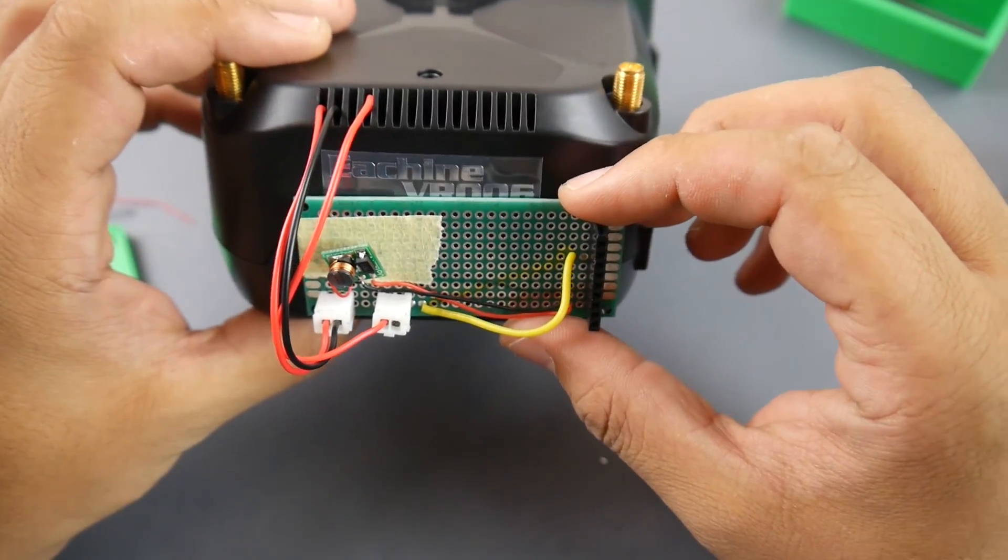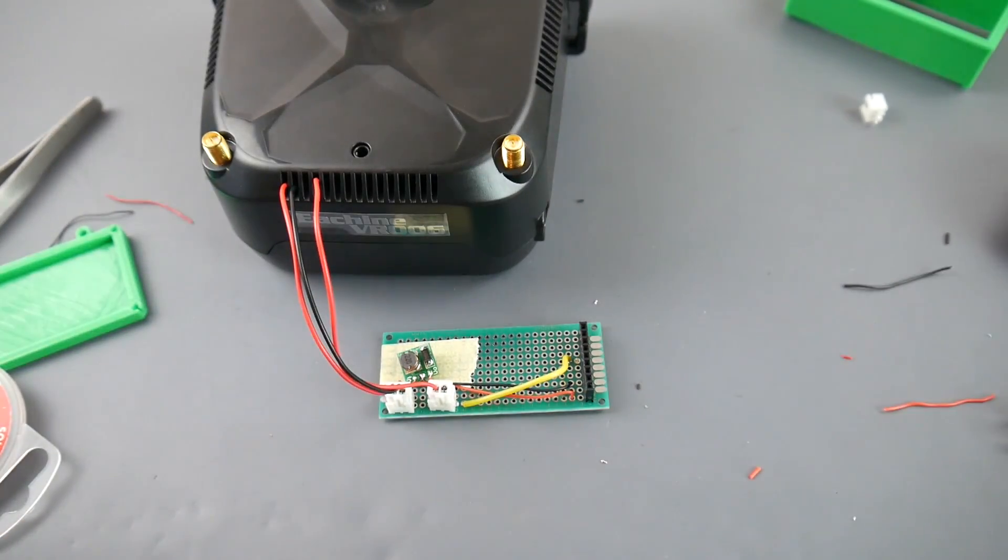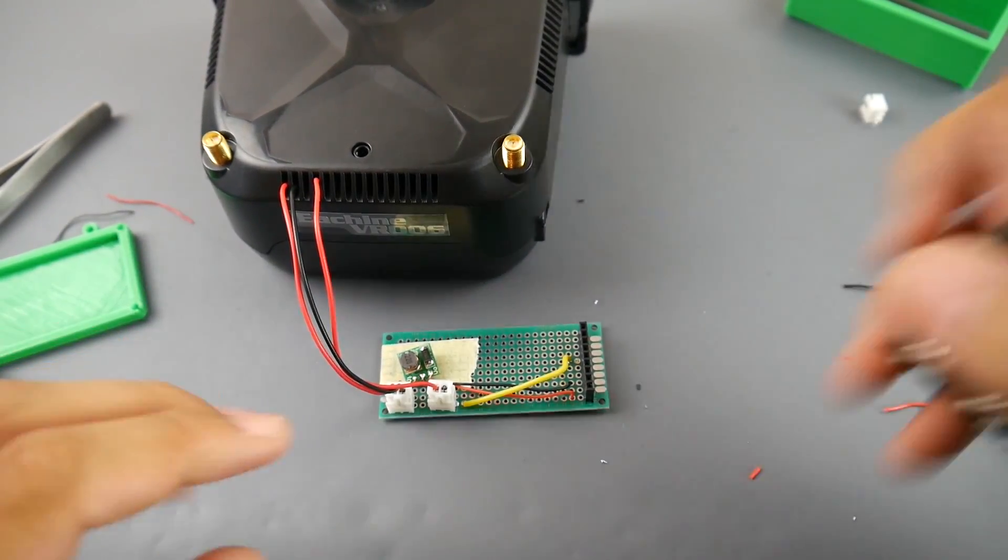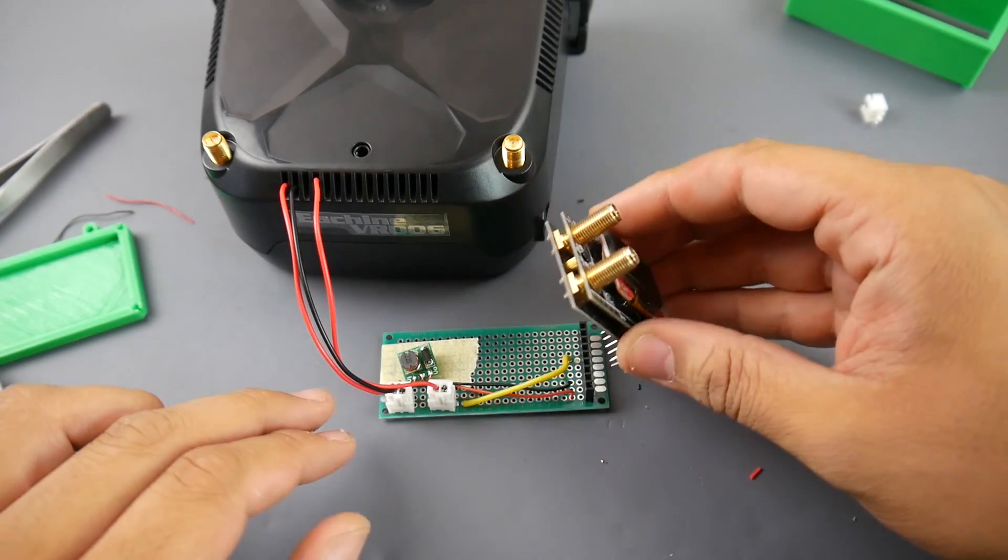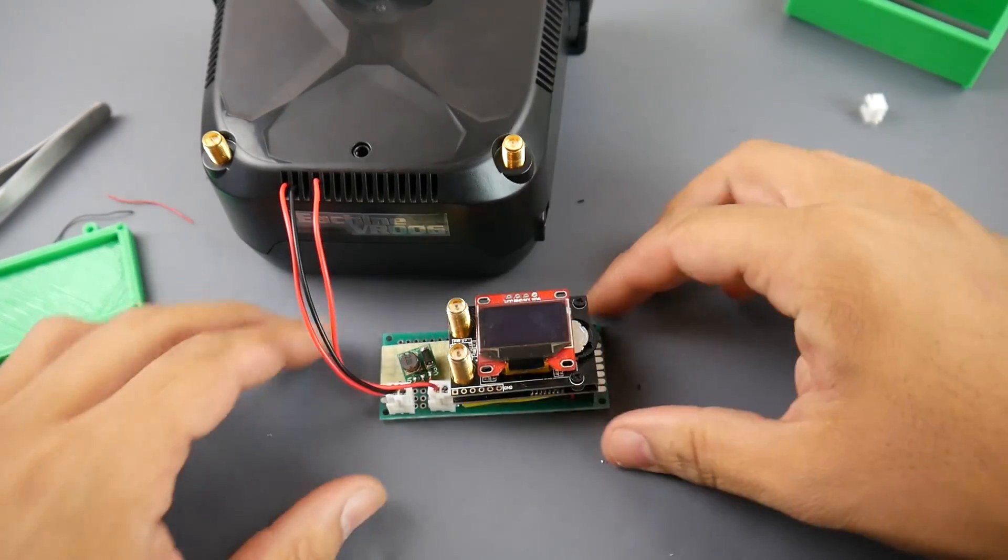And next thing we want to do is I think if we bring in a Fatshark module, it should boot, I believe, because we took direct battery power. I don't know where the battery power is coming from currently. Let's see.